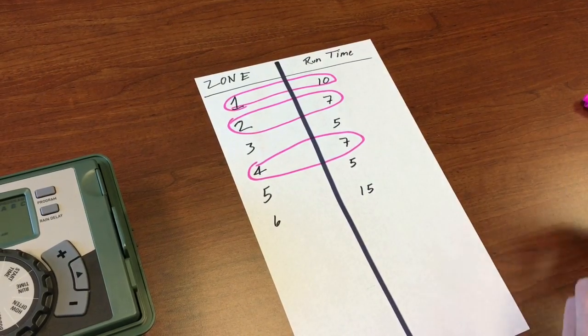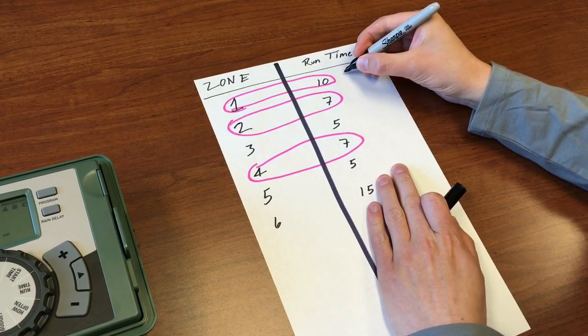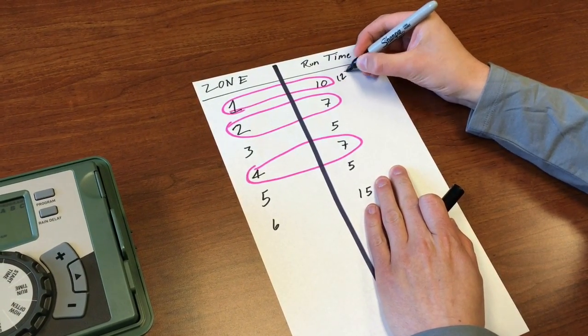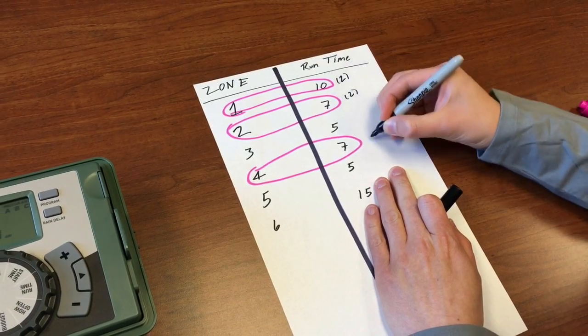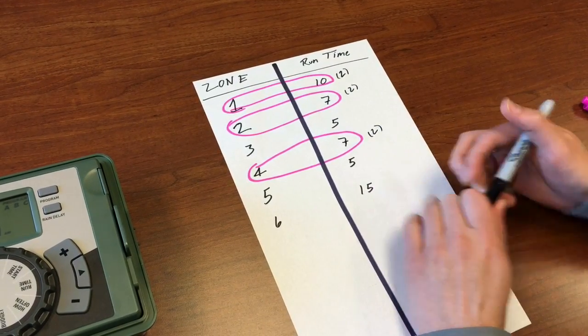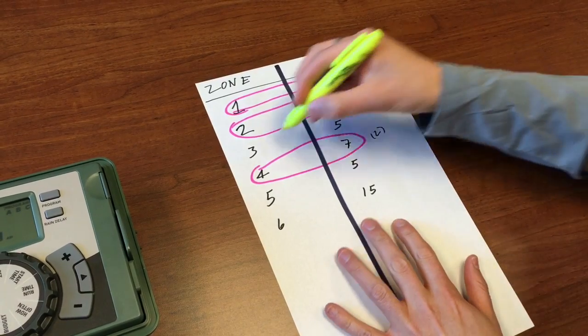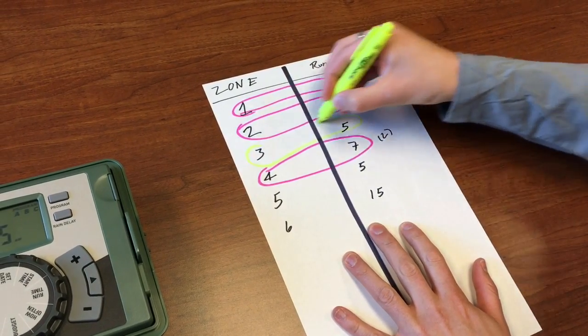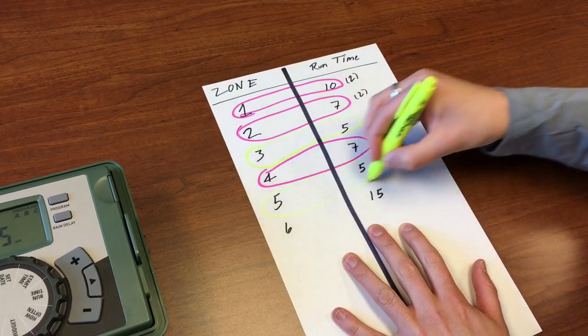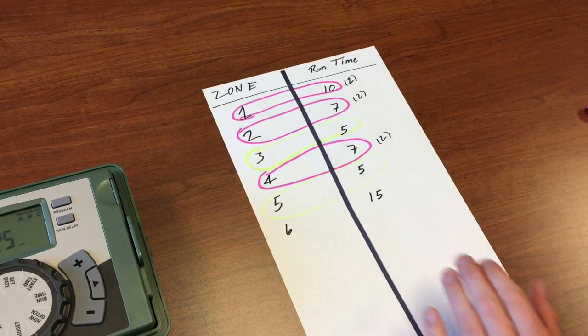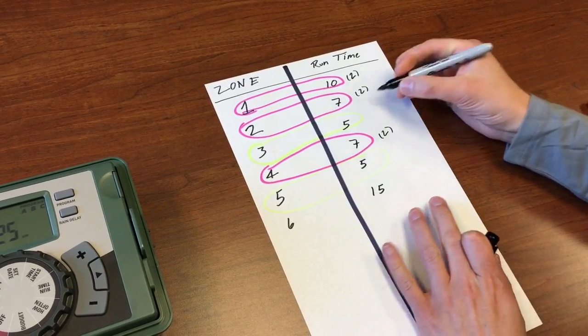Zones three and five we have them running at five minutes but they don't need to run quite as often. Let's say these are flower beds and not lawn, they only need to run once every three days.